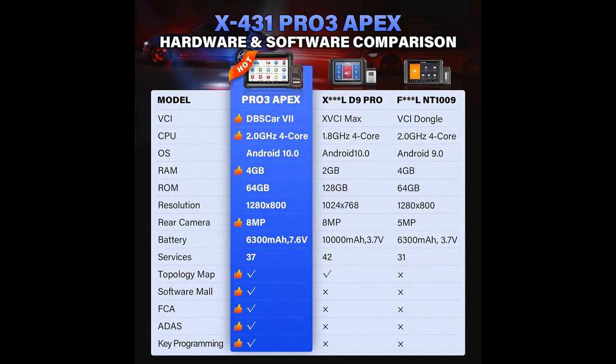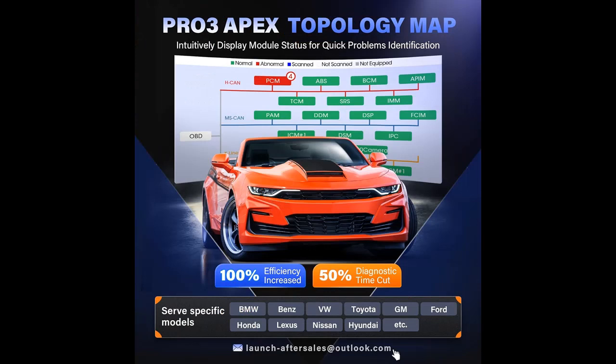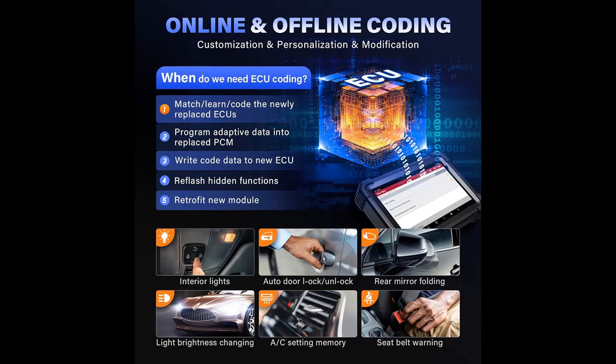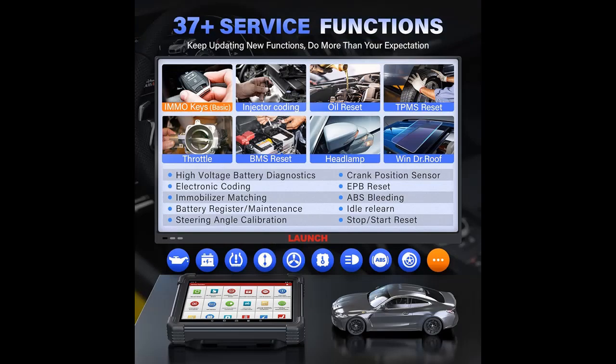CAN FD, DOIP, and FCA Cars: The Launch X431 Pro 3 Apex is the only CAN FD and DOIP compliant scan tool among same-level car scanners, with no need for a CAN FD adapter, saving 100-plus dollars, and works on GM 2024 newer, BMW F&G, 2018 Volvo, 2017 Land Rover, boosting 2x faster data transfer. Auto-Auth access provided. The Launch Diagnostic Scanner facilitates technicians to visit and diagnose more FCA vehicles including Chrysler, Fiat, Jeep, and Dodge without gateway limitation.